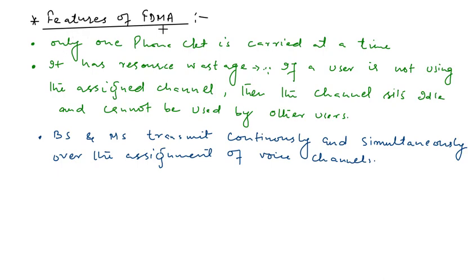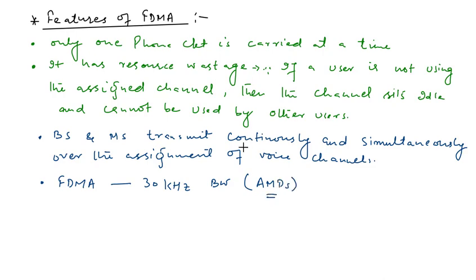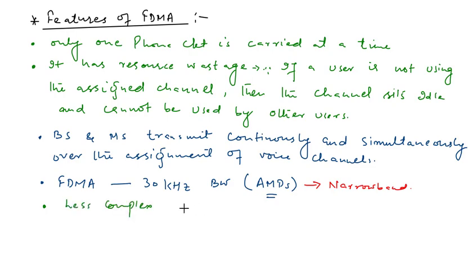In FDMA, the channel bandwidth is 30 kHz for a typical AMPS system — the American Mobile Phone System — and is considered narrow band. When comparing this FDMA system with the TDMA system, where channels are divided in terms of time slots, FDMA is considered less complex than TDMA.